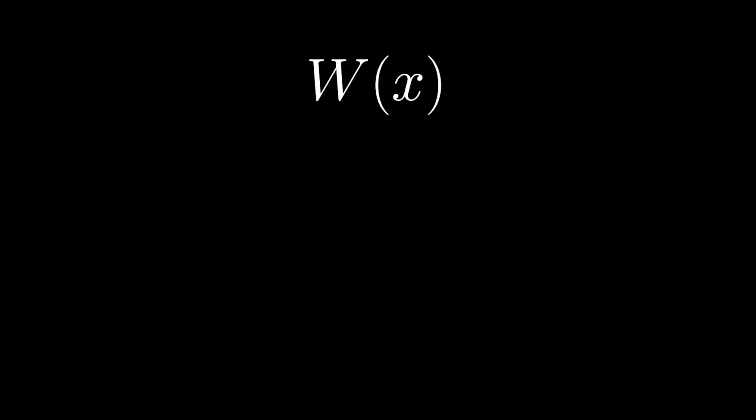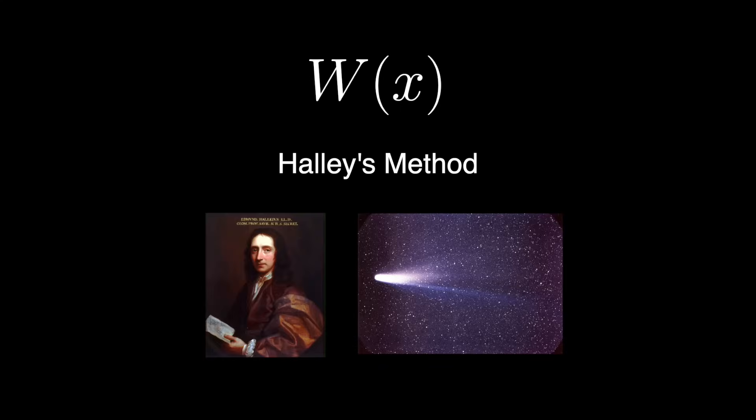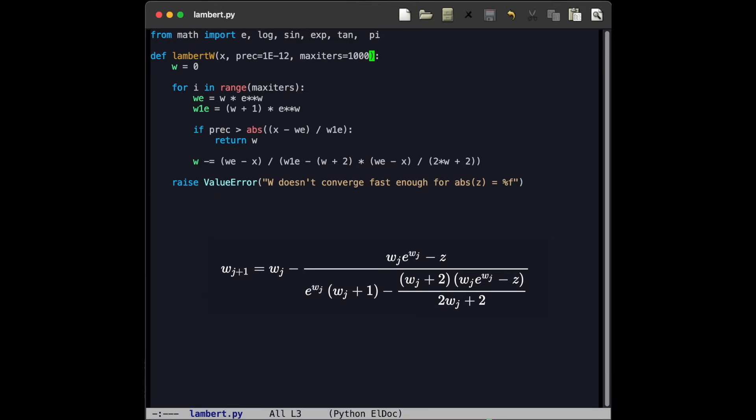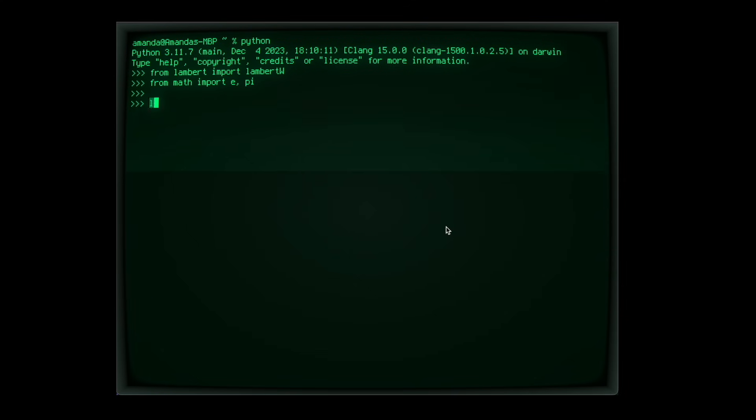The best we can do is try and approximate it. We can get a good, efficient approximation using a technique called Halley's method. Yes, this is the same Halley as the comet. Using Halley's method gives us this formula, which we can implement as a function in the Python programming language. We see that for 1, it gives us the omega constant.